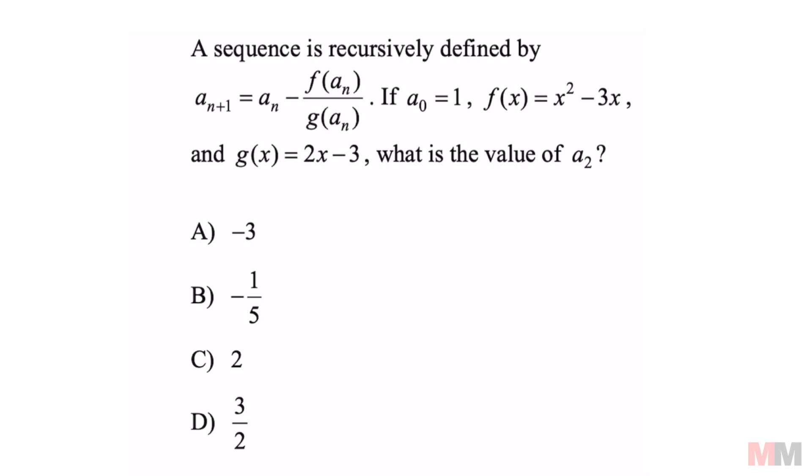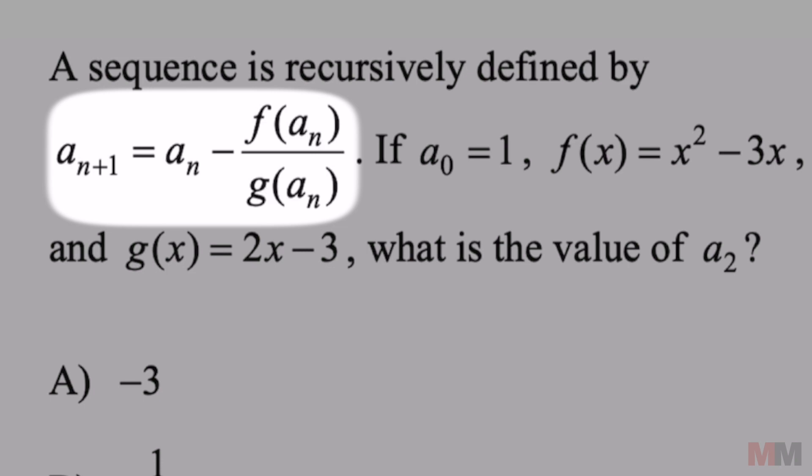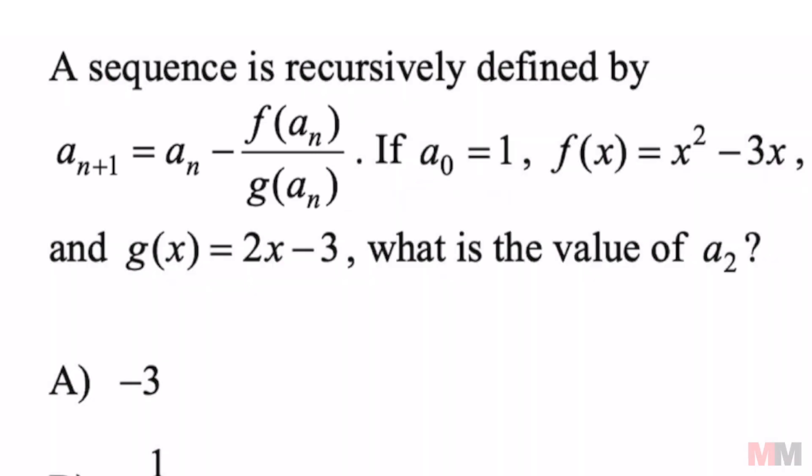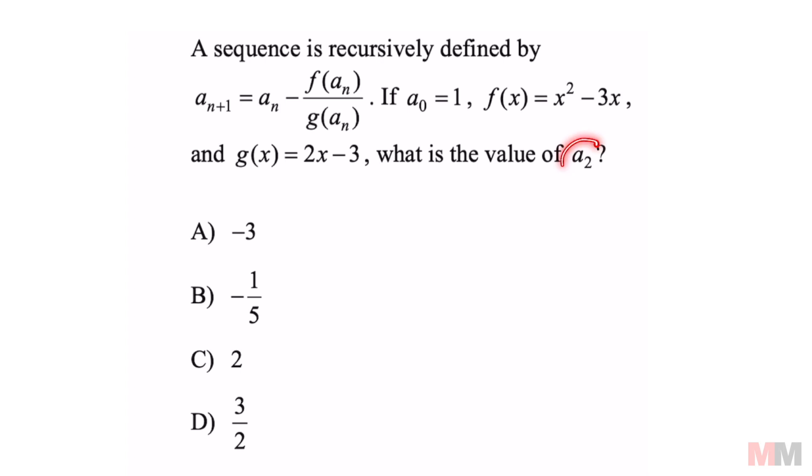We got a sequence that is recursively defined by this, where a sub 0 equals 1, and we got these two functions. What is the value of a sub 2?